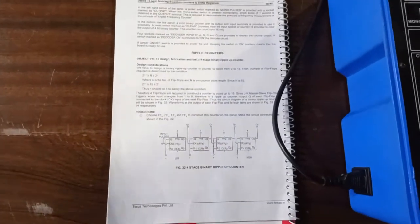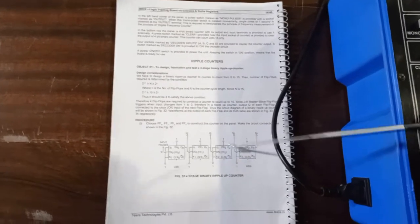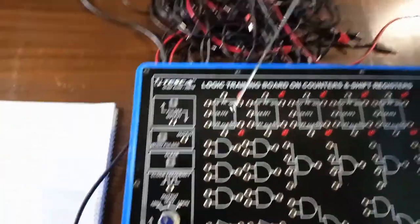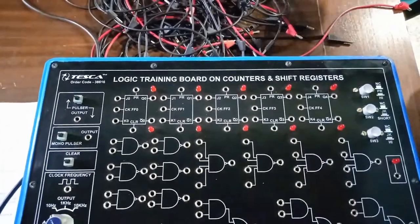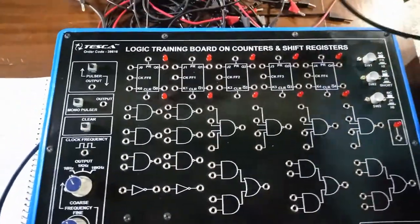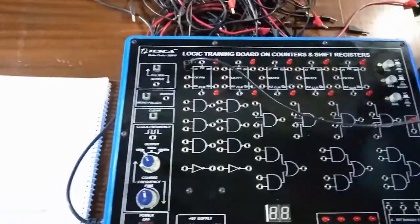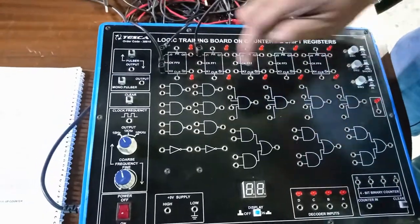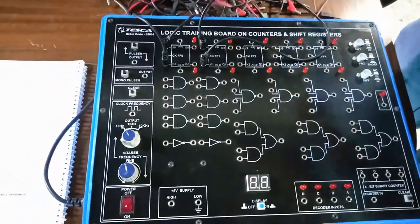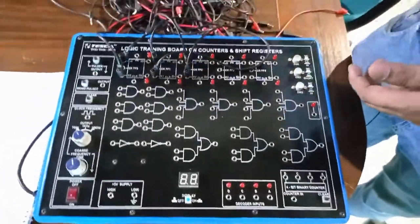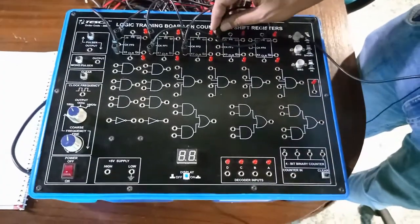In this figure we have used 4 flip-flops: FF0, FF1, FF2, and FF3. Similarly, on the training board we have FF0, FF1, FF2, and FF3. To understand the 4-bit ripple counter, I am going to make connections as shown in the manual. First of all, short the J0-K0 terminal, J1-K1 terminal, J2-K2 terminal, and J3-K3 terminal.